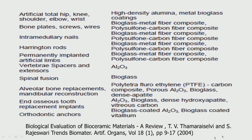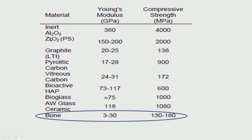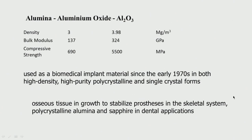Looking again at this data: alumina, zirconia, graphite, carbon, hydroxyapatite, bioglass, and glass — Young's modulus varies a lot. Very low for vitreous carbon and pyrolytic carbon, hydroxyapatite at 73, going right up to alumina at 380. For compressive strength, carbon is comparable to bone material whereas hydroxyapatite is quite high. This table shows how each oxide varies, and carbon seems to have reasonably good properties compared to bone.